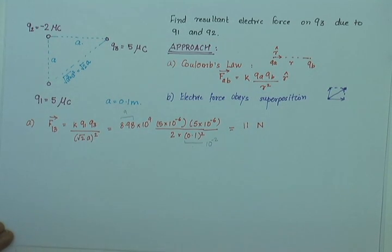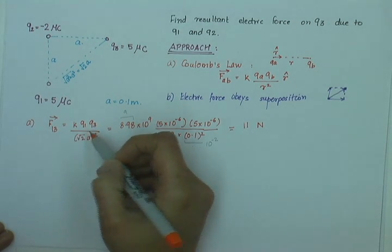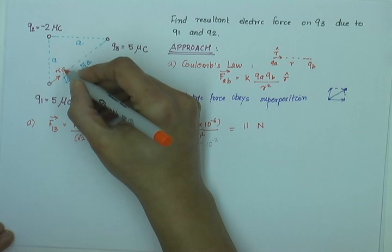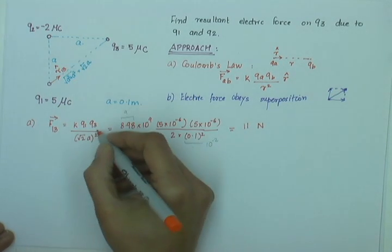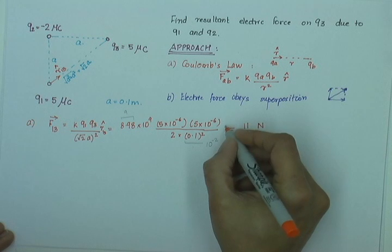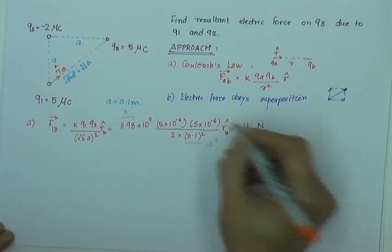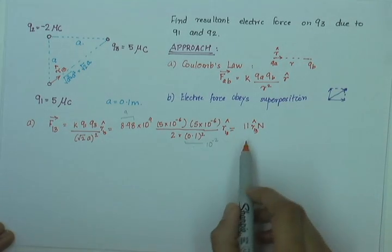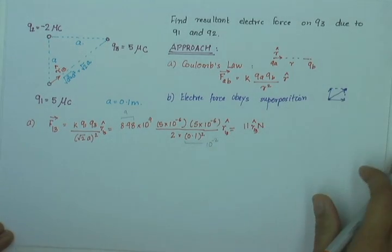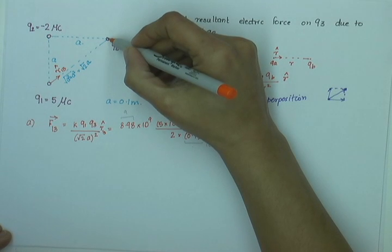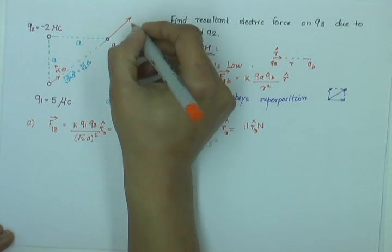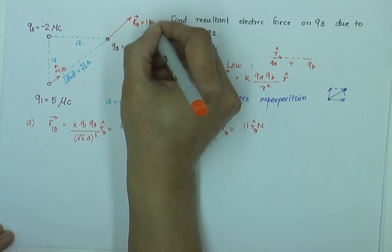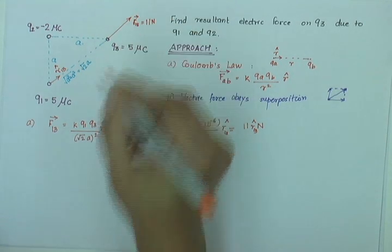Let us see what the direction of F13 will be. Direction of this is given by a unit vector R13 which acts from 1 to 3. And this is 11 R13 cap. And thus, we have force 13 acts in the direction of R13. So, this is F13 which is 11 Newton in that direction.